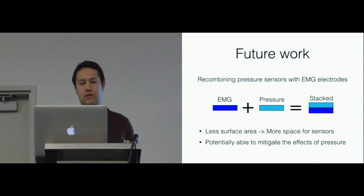For example, you could combine these sensors now, so you could stack them on top of each other, and in this way, you have less surface area, which means there's more space for sensors. You may also be able to potentially measure the pressure and, in fact, correct this modulation from the EMG if it is useful.